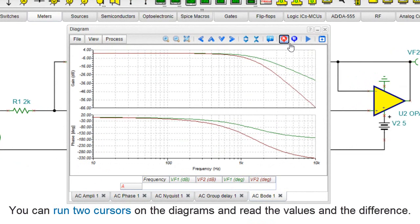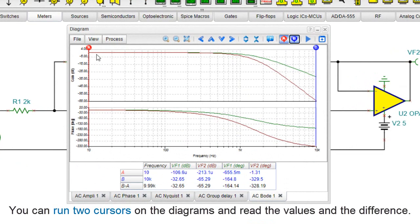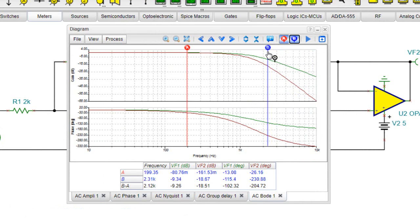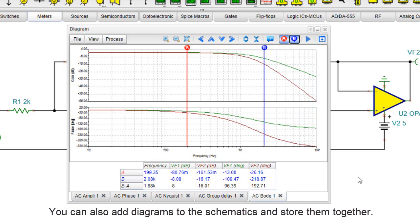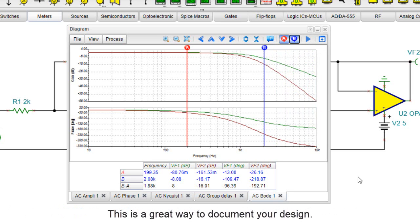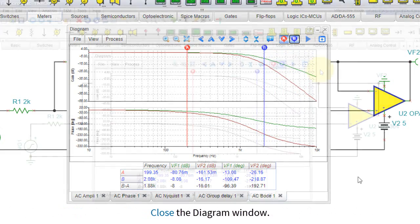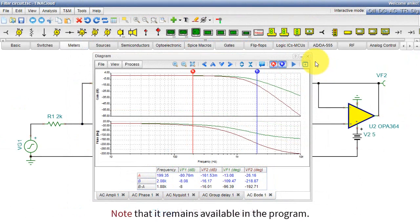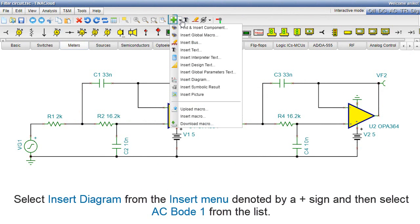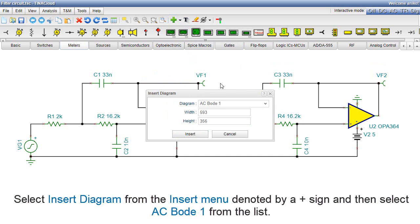You can run two cursors on the diagrams and read the values and the difference. You can also add diagrams to the schematics and store them together. This is a great way to document your design. Close the Diagram window. Note that it remains available in the program. Select Insert Diagram from the Insert menu, denoted by a plus symbol, and then select AC Bode 1 from the list.